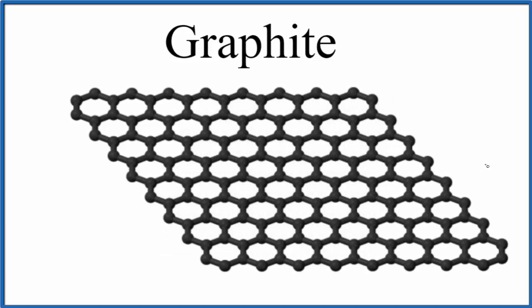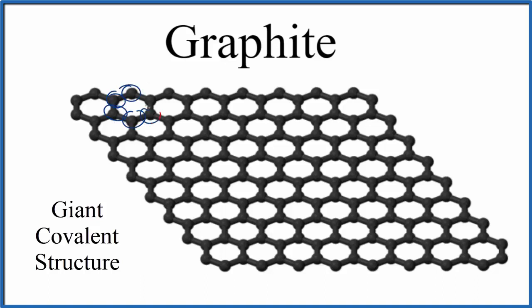So to recap, because we have only carbon atoms, carbon, that's a non-metal. When we have non-metals bonded together, we have a covalent bond. In this case, the covalent bond is what we call a giant covalent structure, because we have lots of these carbon atoms here bonded together in a large structure.